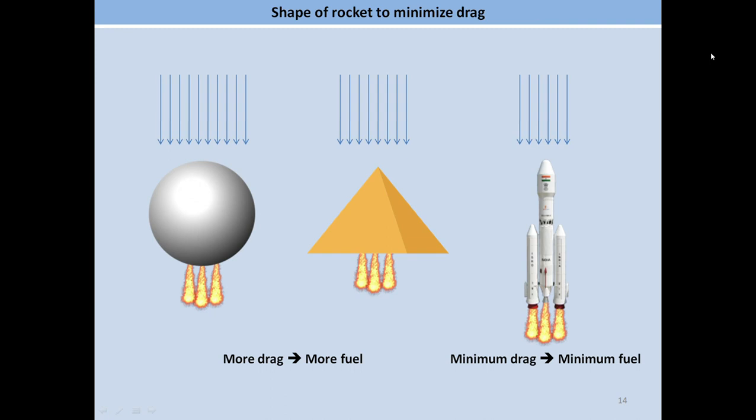If the strength of aerodynamic drag is too high, then in order to overcome this and reach space, a rocket will need to burn a greater quantity of fuel. Given this problem, the only way to improve the fuel efficiency of a rocket is to design its shape appropriately, i.e., in a manner that will result in minimum aerodynamic drag. This can be done effectively through aerodynamic studies.